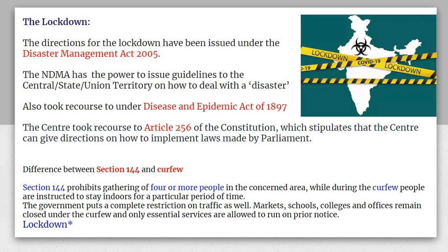Article 256 enables cooperative federalism — all the states cooperated, and then the centre imposed a nationwide lockdown.